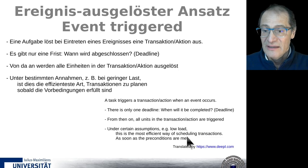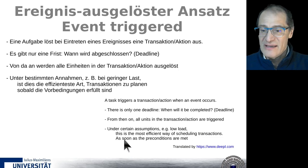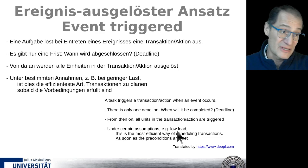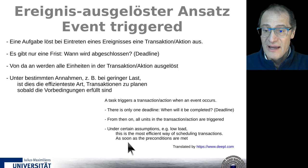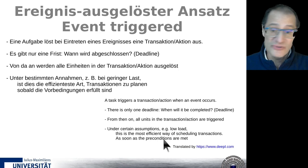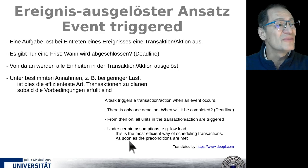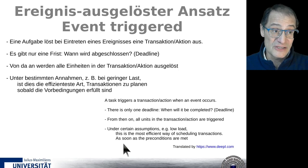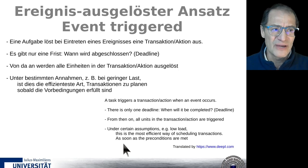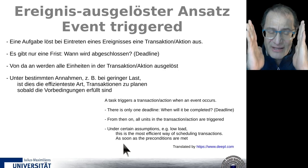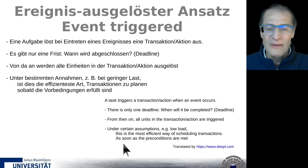A task triggers a transaction whenever an event occurs. There is only one deadline: when the whole chain shall be completed. We don't see when each individual process or communication shall be concluded — we see only the overall chain from start to end, and we know the end time. All units in the transaction are activated one after the next — it's a chain. Under certain assumptions such as low load, this is the most efficient way of scheduling transactions — everything is activated as soon as possible.